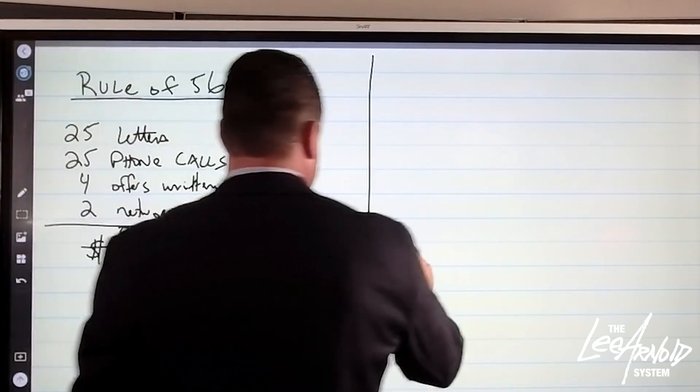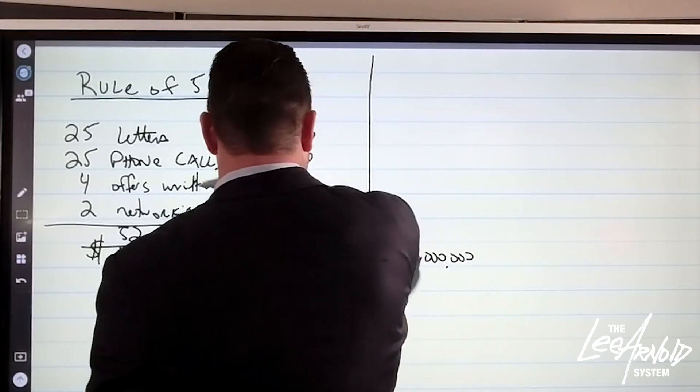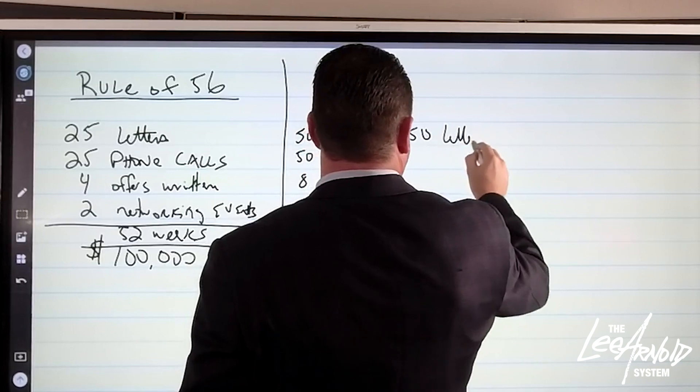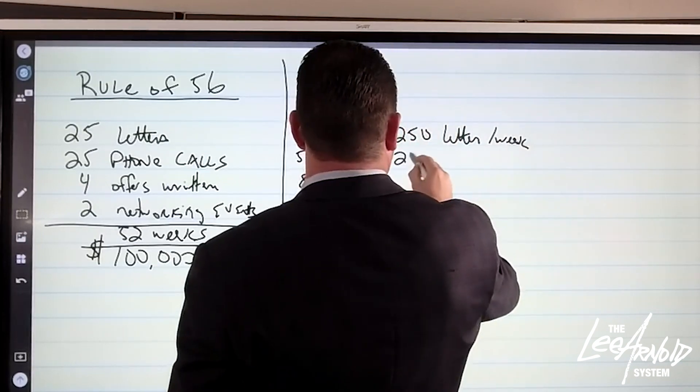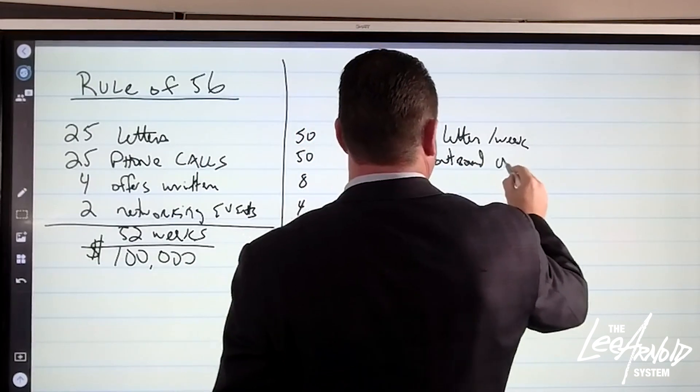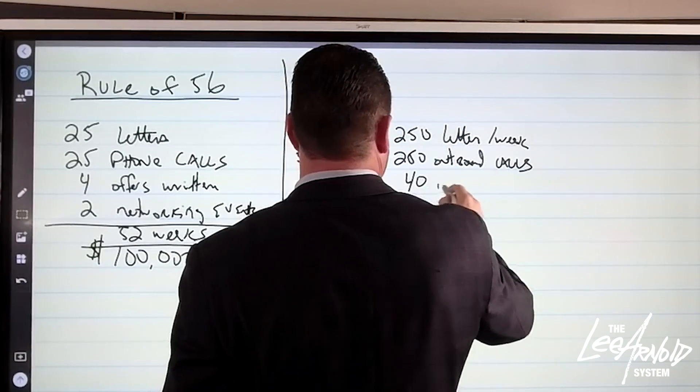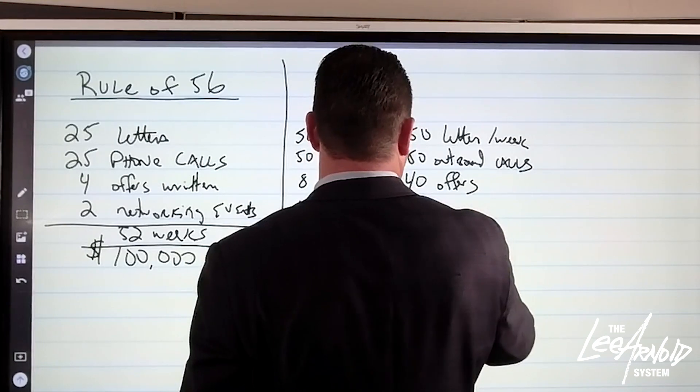Now, what if we want to do a million? If I want to do a million, I'm just going to go through and add a zero. I'm going to do 250 letters per week. We're going to make 250 outbound calls. We're going to make 40 offers. And we're going to attend 20 networking events.